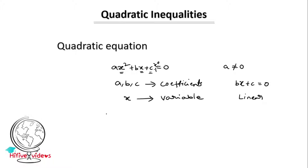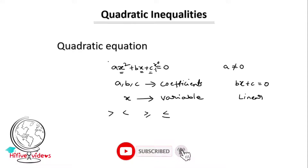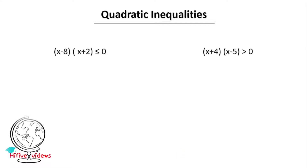That means greater than, less than, greater than or equal to, or less than or equal to. In this inequality sign, there are quadratic inequalities, okay students? Now we will take quadratic inequalities examples. For example, x minus 8 into x plus 2 less than or equal to 0, and x plus 4 into x minus 5 greater than 0. These are two examples of quadratic inequalities.